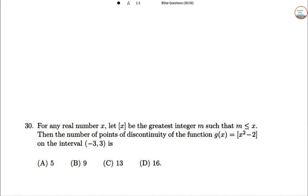Time for the last question of 2020. For any real number x, let [x] be the greatest integer M such that M ≤ x. Then find the number of points of discontinuity of the function G(x) = [x² - 2] in the interval (-3, 3).